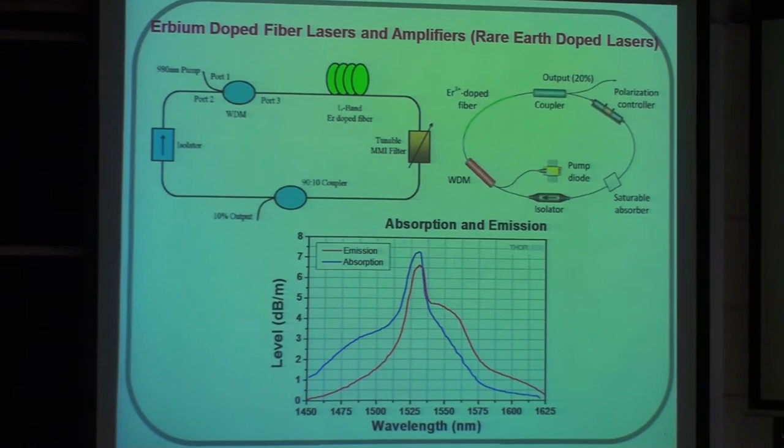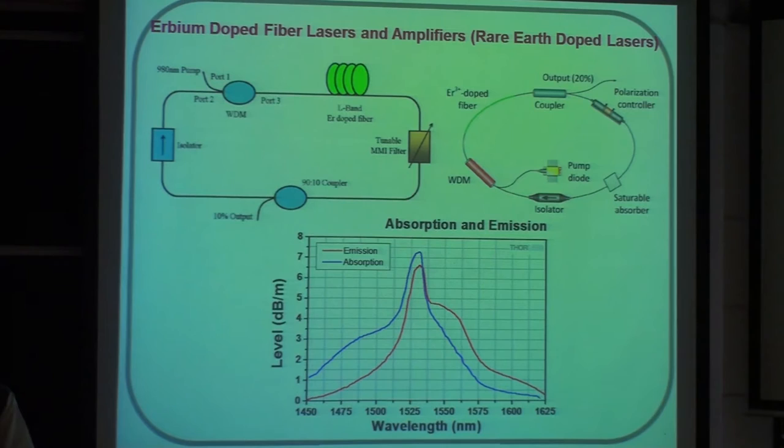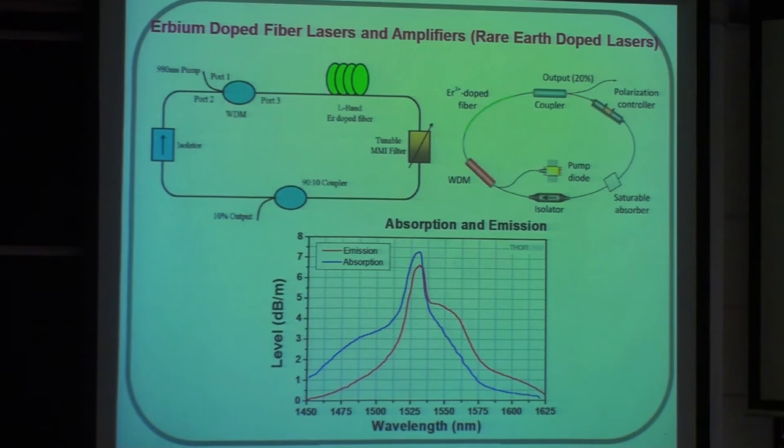On top of that, they have now started making fibers that are not just lossless around 1550 — they are lossless all the way from 1.2 microns to 1.7 microns. That's a 500 nanometer bandwidth ready to be utilized. Now let's do one more laser: titanium sapphire.